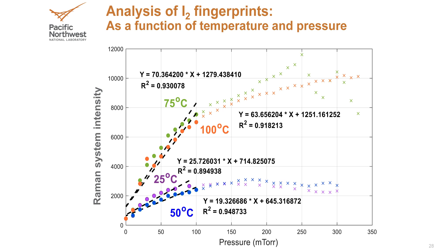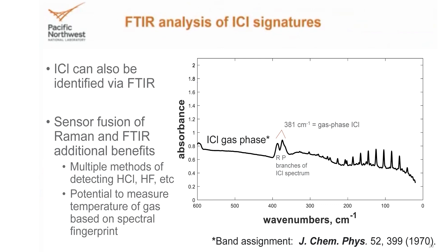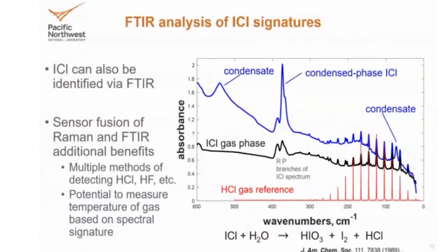I2 is not the only potential iodine species we might see in the off-gas. We picked ICl as an example, and we started off by looking at the Raman spectroscopy — we got the beautiful signature we can use to identify and quantify. But we also wanted to look at FTIR, Fourier Transform Infrared Spectroscopy. It's very similar to Raman and very complementary, but it looks at the system just a little bit differently. Using FTIR on ICl, we got a very nice gas-phase signature of ICl, but we also got the signature of condensed ICl and even the signatures of HCl, which is a decomposition product of ICl — and potentially indirect temperature measurements as well.